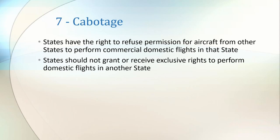Article 7 defines cabotage rights in aviation. The word cabotage actually predates aviation and was originally referred to shipping. Cabotage is the right to operate sea, air or other transport services within a particular territory. ICAO specifically have laid out in this article that states have the right to refuse permission to other states who wish to perform commercial domestic flights in that state. Additionally, no state should enter an exclusivity contract for domestic flights in a state other than the state the aircraft belongs to.